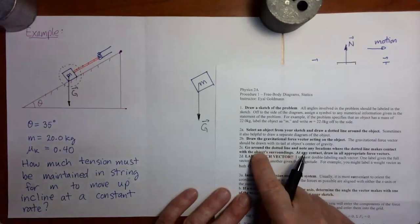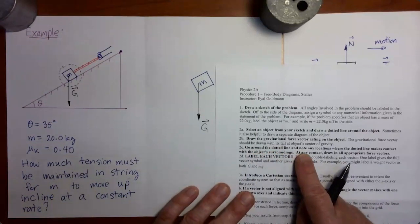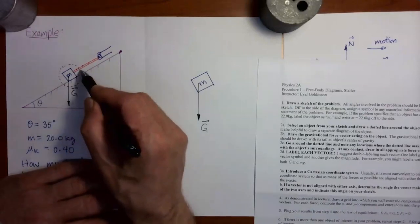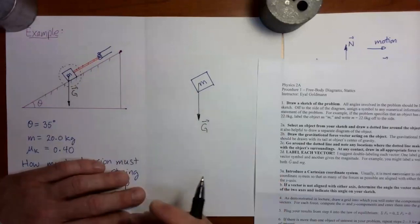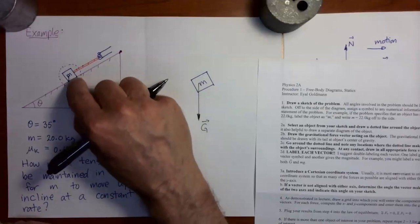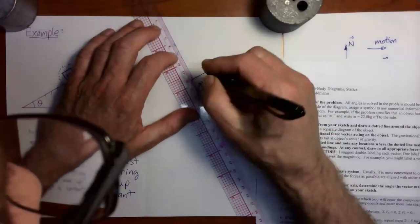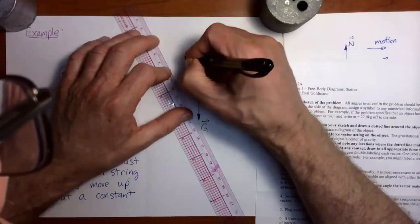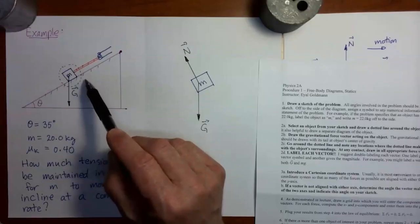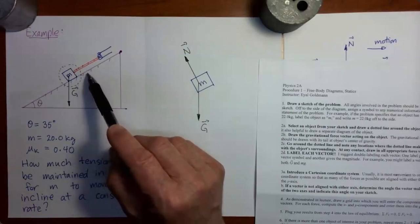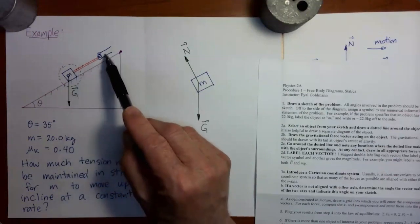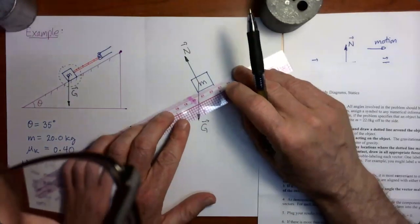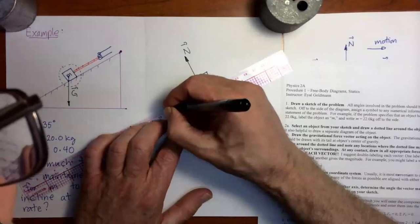Now I'm going to return to the handout. Step 2c says: go around the dotted line and note any locations where things reach in through the dashed line to exert forces on the object. Down here, I see the dashed line cutting through the surface. We ask ourselves: what forces might that inclined surface be exerting on the mass? First, we would have the normal force, so I'm going to put in the normal force. In this problem, the inclined surface will also be exerting a kinetic friction force on the mass. Since the mass is being pulled up the incline, the kinetic friction force is going to oppose that sliding motion by pointing down the incline. So I'm going to put in a kinetic friction force pointing down the incline.